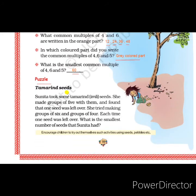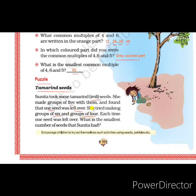Now the next topic is a puzzle. Sunitha took some tamarind seeds. She made groups of 5 and found that one seed was left over. She tried making groups of 6 — again, one seed was left over. She also tried groups of 4 — every time, one seed was left over. The question is: what is the smallest number of seeds that Sunitha had?